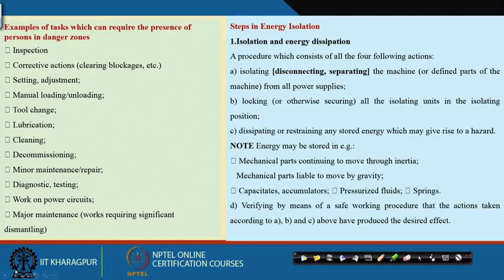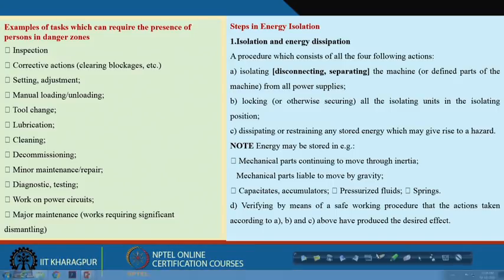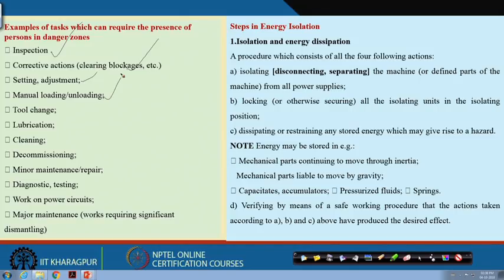So when do you require lockout, tagout, or isolation? There are various activities: thorough inspection of machines going inside to check things, corrective actions, adjustments, putting wedges, settings, loading or unloading materials in the machine, changing tools, lubrication — many places where if you do not put off the power you may get entrapped. Also cleaning, decommissioning, maintenance, diagnostics, working on power circuits, and major maintenance.